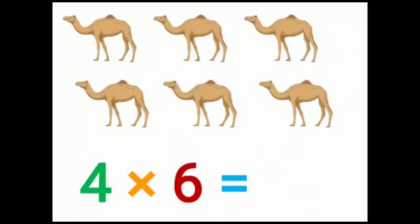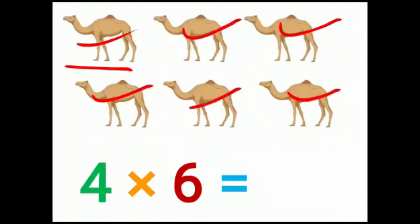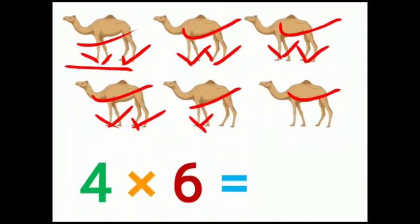Children, these are camels. 1 camel has 4 legs. There are 1, 2, 3, 4, 5, 6 camels. 1, 2, 3, 4, 5, 6, 7, 8, 9, 10, 11, 12, 13, 14, 15, 16, 17, 18, 19, 20, 21, 22, 23, 24 legs.